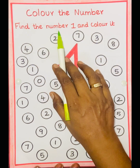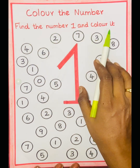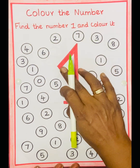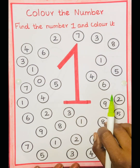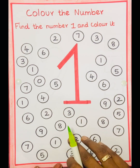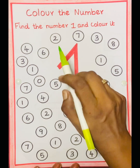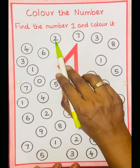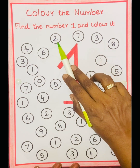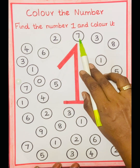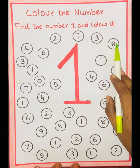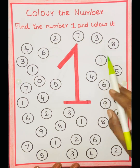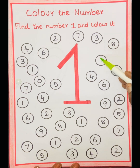Find the number 1 and color it. See the number 1. So we have to find the number 1 and color it. See, this is 2, so we should not color it. 7, 3, 8, 1 — see 1 here, so we have to color it.